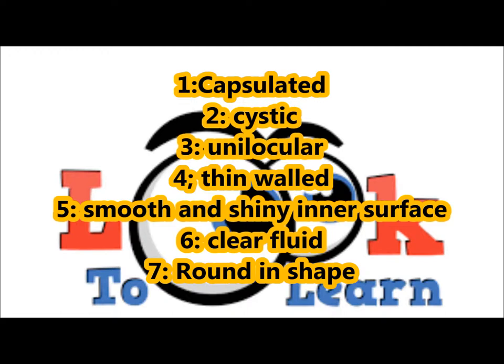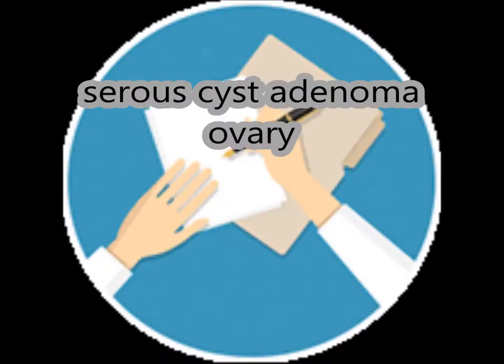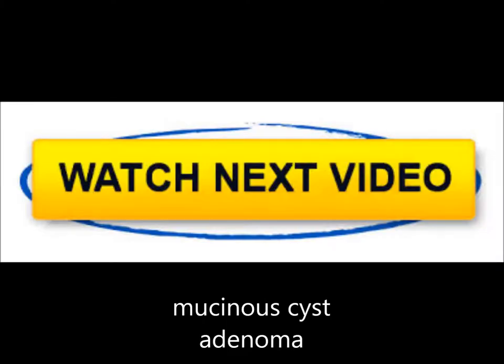Grossly, the tumor is capsulated, cystic, unilocular, thin-walled, with smooth and shiny inner and outer surfaces. When freshly cut, there is clear fluid, and the shape is round. Microscopically, there is serous epithelial lining and fibrovascular stroma. The diagnosis is serous cyst adenoma of the ovary: serous refers to the type of lining, cystic because it is fluid-filled, and adenoma indicates it is benign.